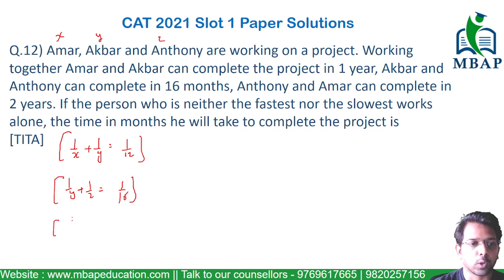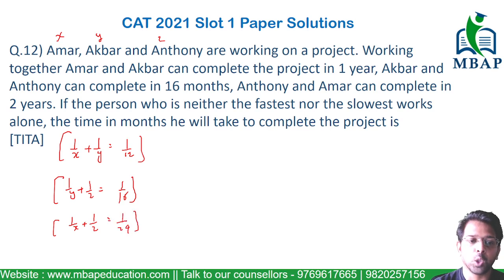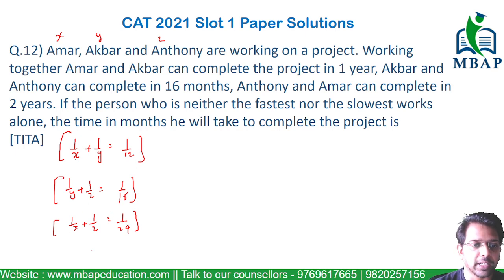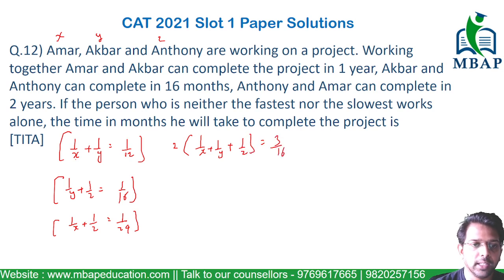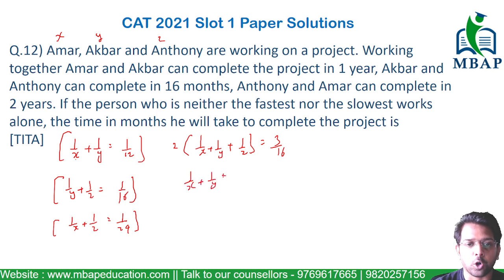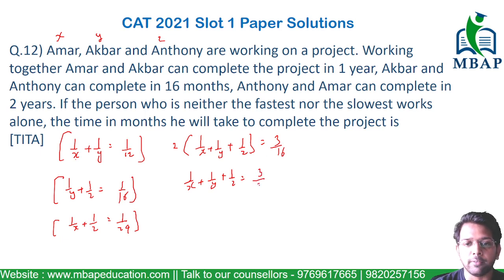And towards the end, I have 1/X plus 1/Z, which is Anthony and Ammar, equal to 1/24 in each month. Since 1/X, 1/Y, and 1/Z each appear twice across the three equations, we get: 2 × (1/X + 1/Y + 1/Z) = 1/12 + 1/16 + 1/24 = 3/16. So the combined work per month by all three together is 3/16 × 1/2, which equals 3/32.